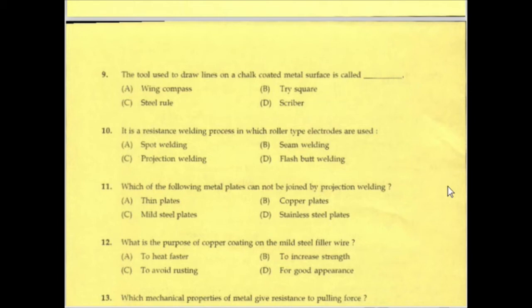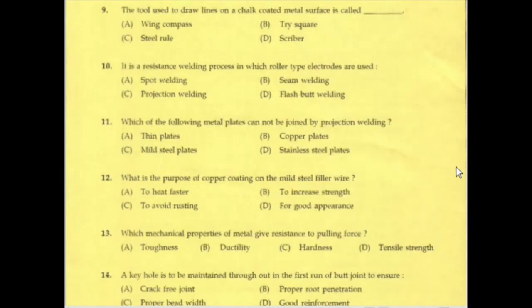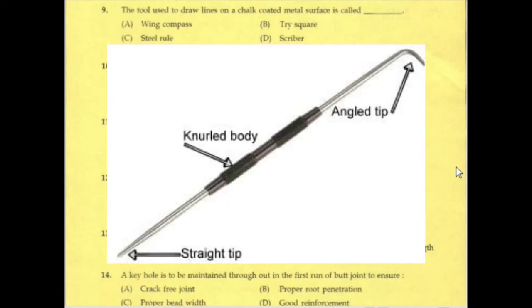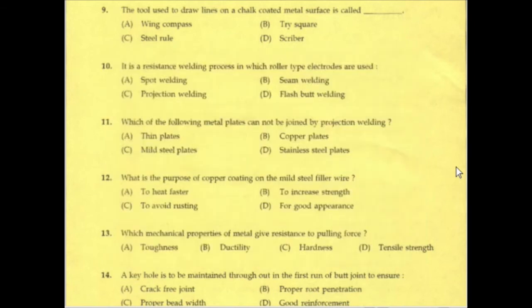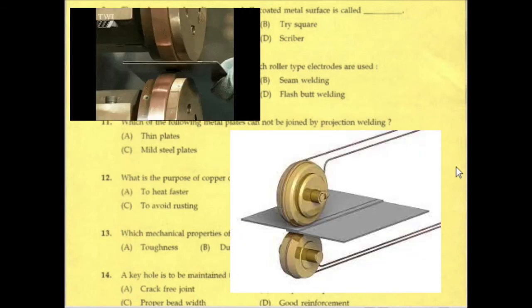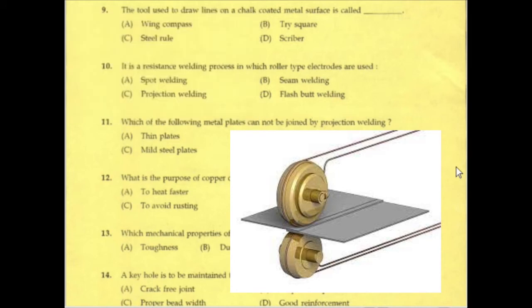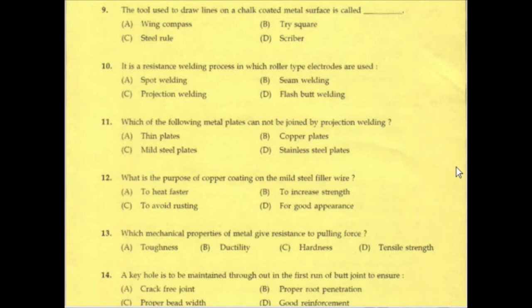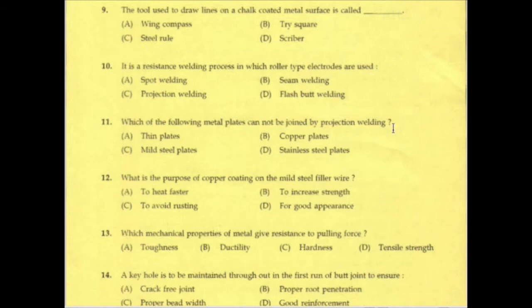The tool used to draw lines on a chalk-coated metal surface is called a scriber. Seam welding is a resistance welding process in which roller-type electrodes are used.